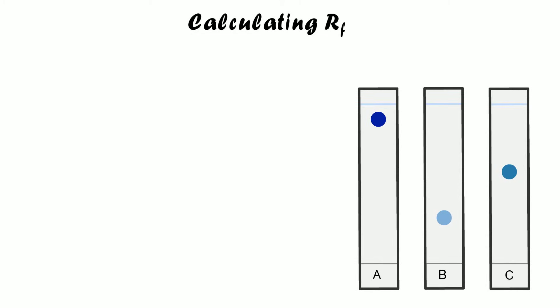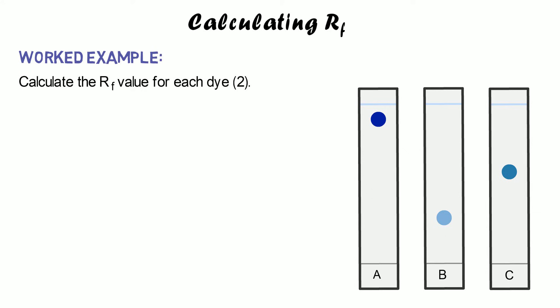You might get these questions in picture format. Here we have a diagram with three separate chromatograms showing different dye spots — dyes A, B, and C. Calculate the RF value for each dye. Realistically in an exam you'd only be asked to do one for two marks, not all three for six marks.